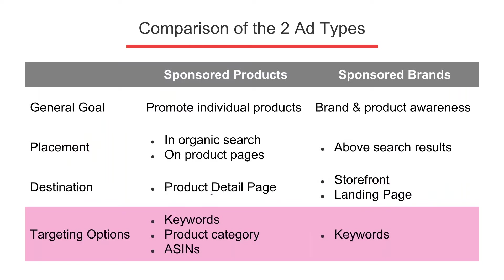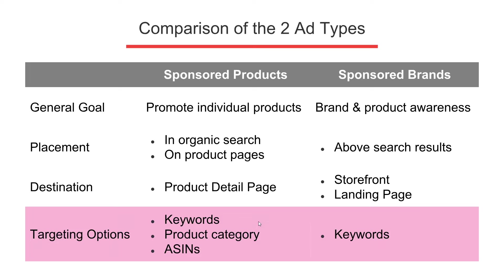Let's do a summary comparison. We've talked about placement — where the products actually show up, in search results or on product pages — and the destination. With sponsored products, they only lead to a product detail page, whereas the sponsored brand placement can lead to a storefront or even a landing page for a small collection of products on Amazon.